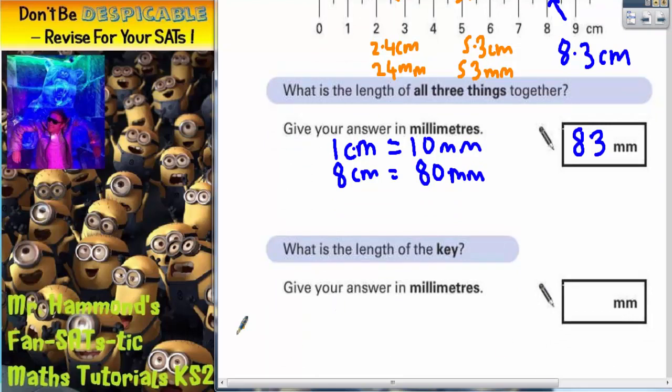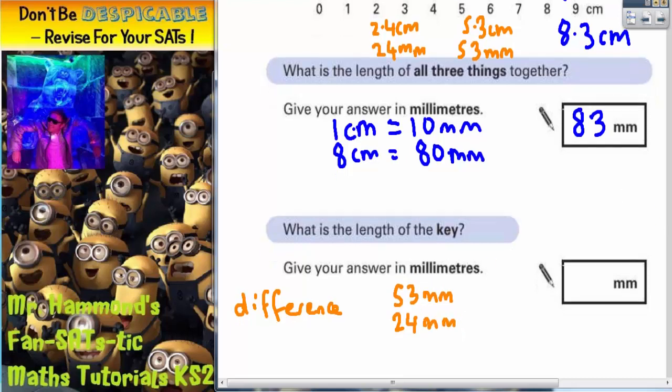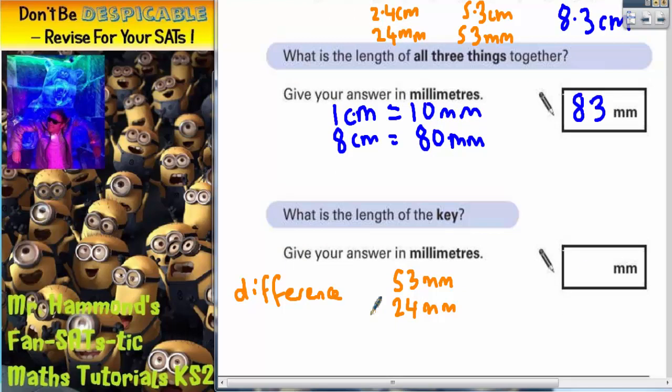So we're looking for the difference between 53 millimeters and 24 millimeters. Any time you find the difference, the easiest way to do it is to do a subtraction column method. And we'll get the answer. So 3 take away 4 we can't do. So we borrow one. And that now becomes 13. 13 take away 4 is 9. And 4 take away 2 is 2. So the answer is 29 millimeters.